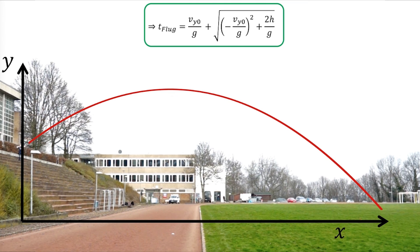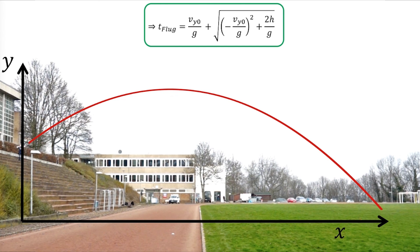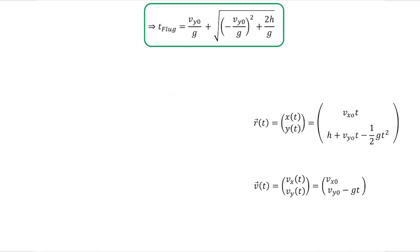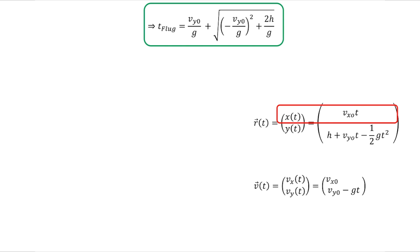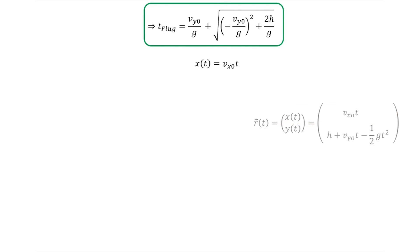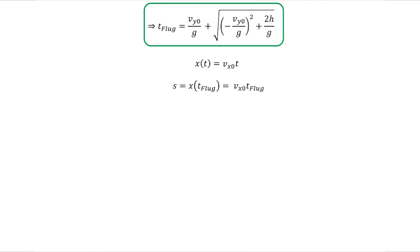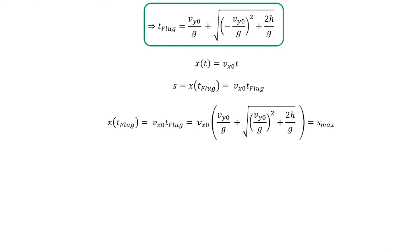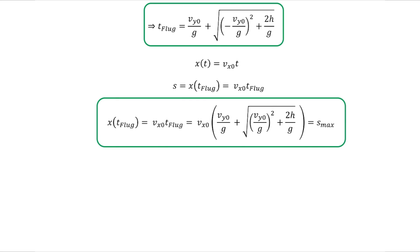Mit dieser Flugzeit, die wir nun bestimmt haben, können wir wieder zu unseren Bewegungsgleichungen zurückgehen, da uns ja die Schussweite interessiert. Die Schussweite ist über die x-Komponente der Ortsfunktion gegeben. Wir setzen die Flugzeit ein: x(t_flug) = Vx0 · t_flug, und erhalten so den komplex aussehenden Ausdruck, der genau der maximalen Schussweite S_max entspricht.